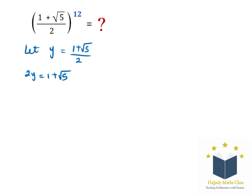Rewriting this equation, we have 2y minus 1 equals the square root of 5. Squaring both sides to get rid of the square root, and expanding (2y − 1)², we are going to have 4y² minus 4y plus 1 equals 5.